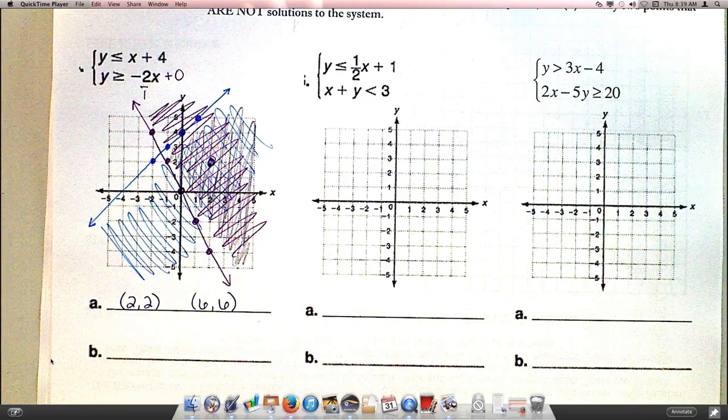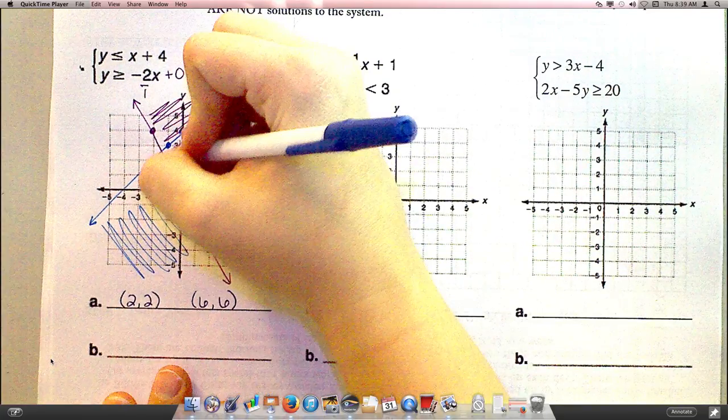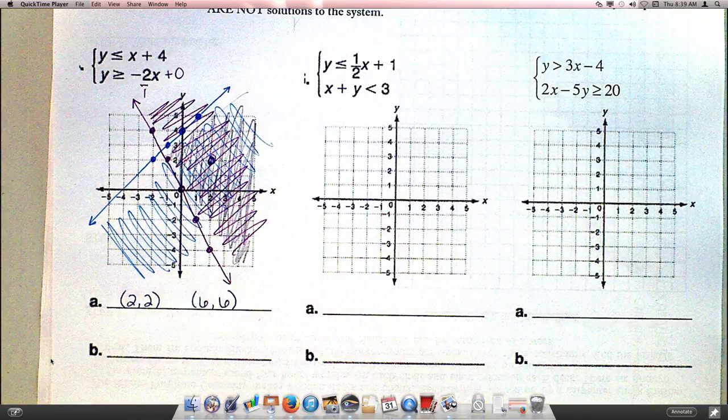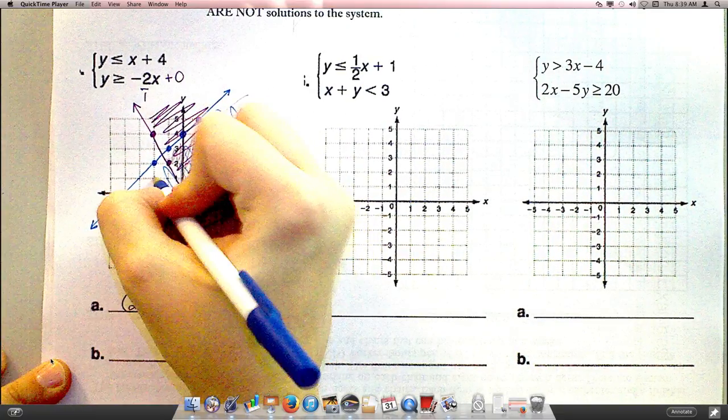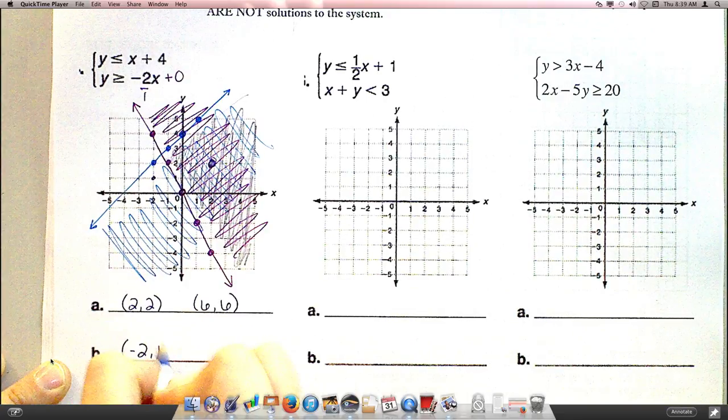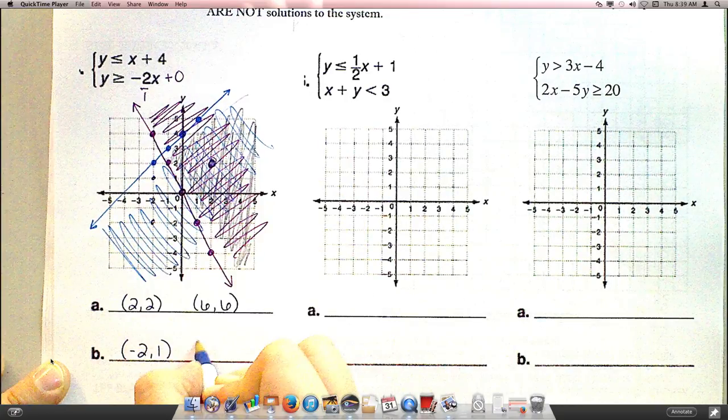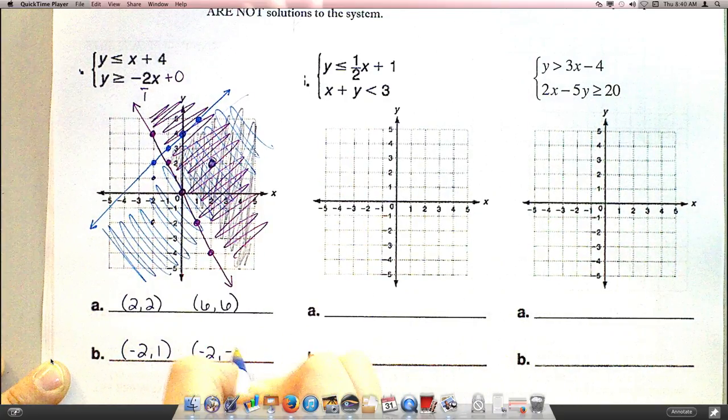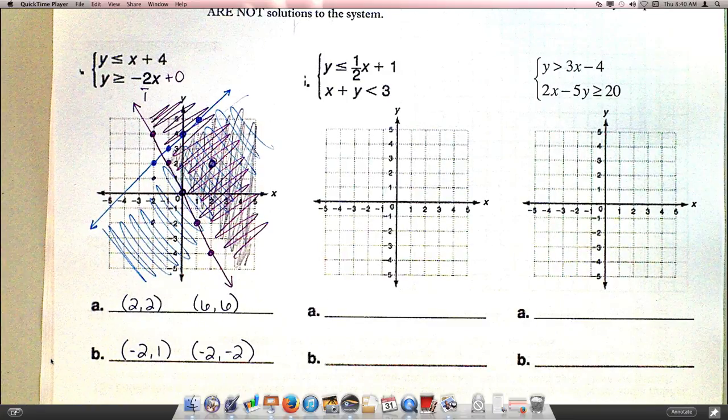Points that are not solutions are points that are anywhere else. Anywhere besides this V here. Negative 2, 1. Yep, that's right there. That would not be a solution. Give me another one. Negative 2, negative 2. Okay, negative 2, negative 2 would be here. Yep, you're right.